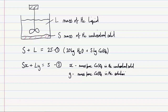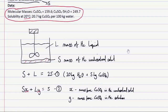We now have two equations but have introduced two extra unknowns, so we need to use the extra data given in the question to work out what mass fractions X and Y actually are. Once we have those, we can go back and solve the two equations in two unknowns. From the data given, at 20 degrees Celsius, 20.7 kilos of copper sulfate will dissolve in 100 kilos of water.